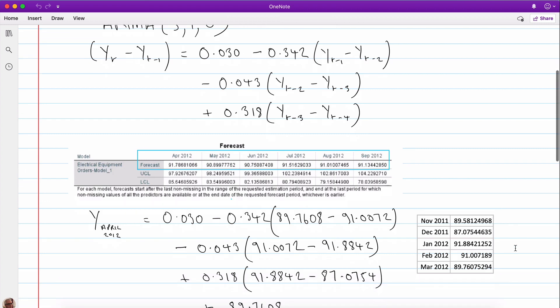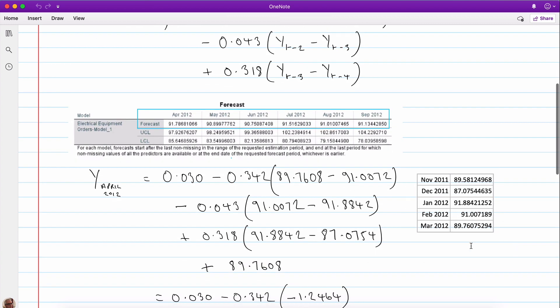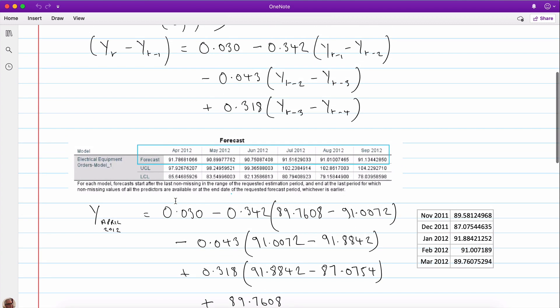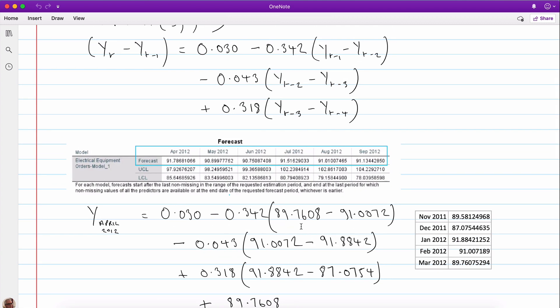So those are the values we need to substitute in. Now here are those final values from our data set, which you can check by looking at the data in SPSS. So I've substituted these in here. So yt minus one, which of course is one period back, in other words March 2012, is that.